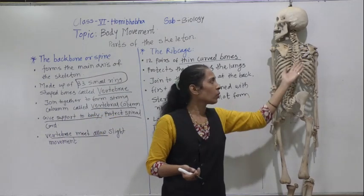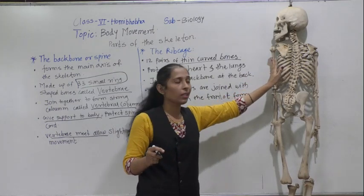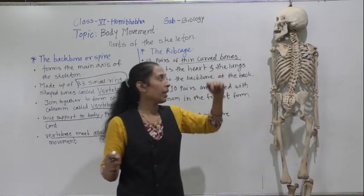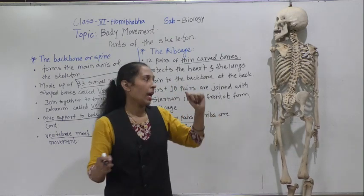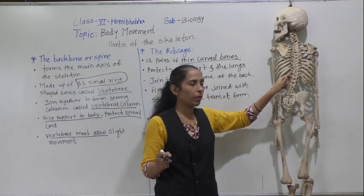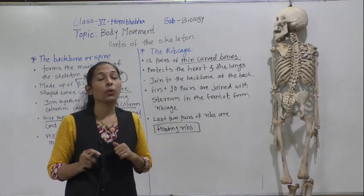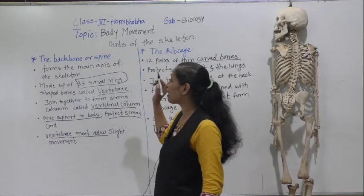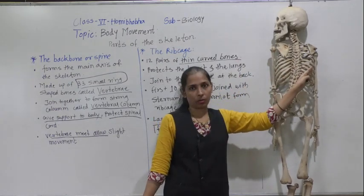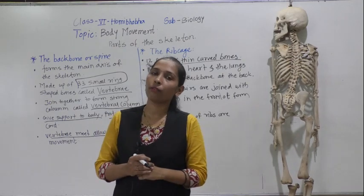So all 12 pairs of ribs form the ribcage, which protects the heart and lungs. All 12 pairs are connected to the backbone from the back. The first 10 pairs are connected to the sternum — also called the chest bone or breast bone — at the front. The last two pairs are called floating ribs because they are free at the front. That covers three parts of the skeleton today: the skull, the backbone, and the ribs. We will discuss the remaining parts in the next video. Thank you.